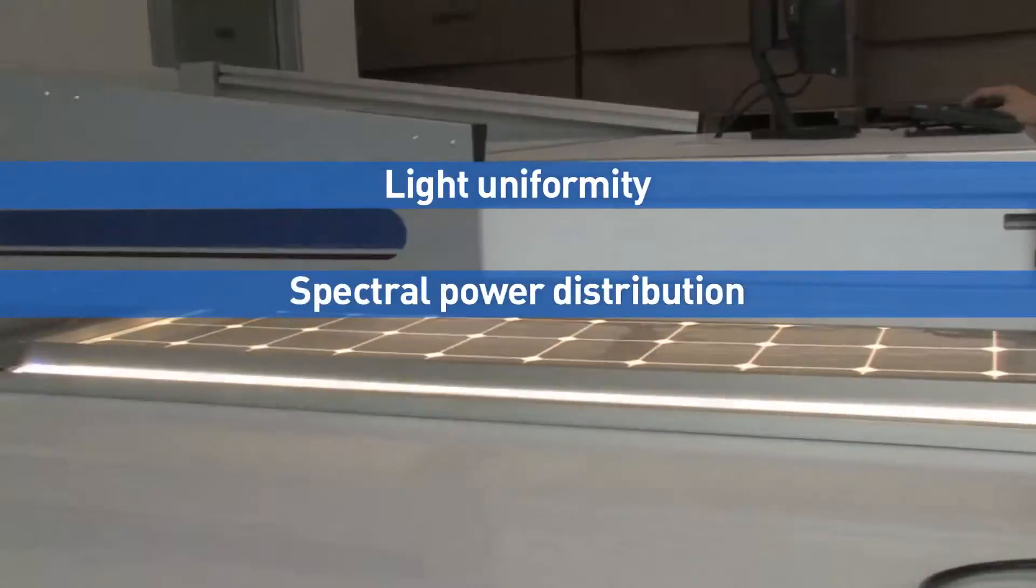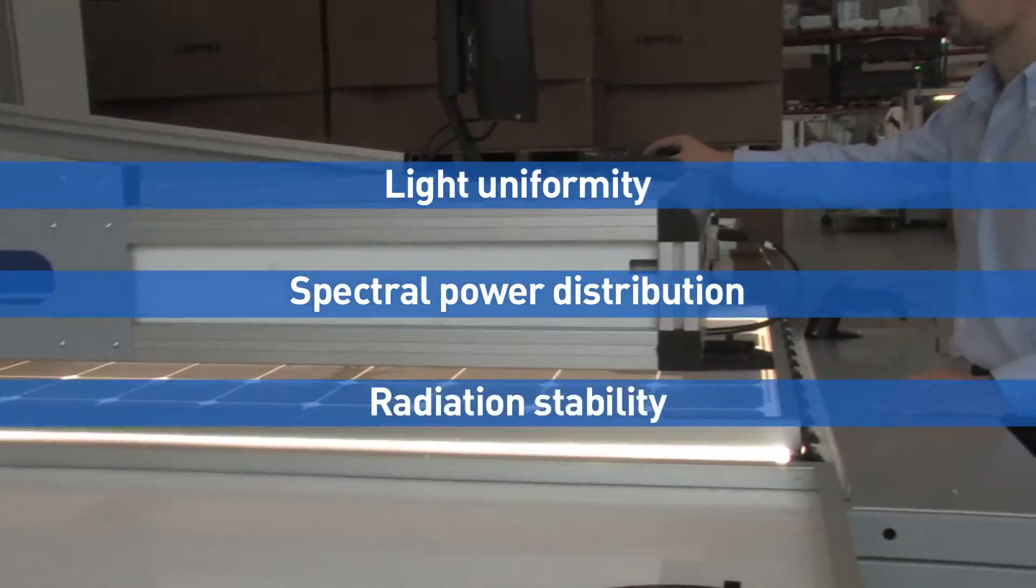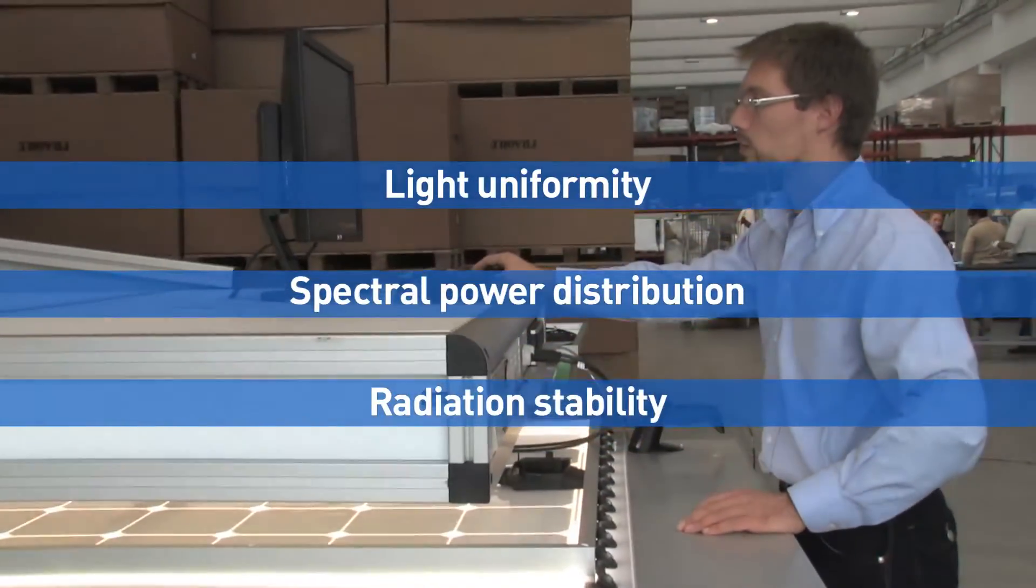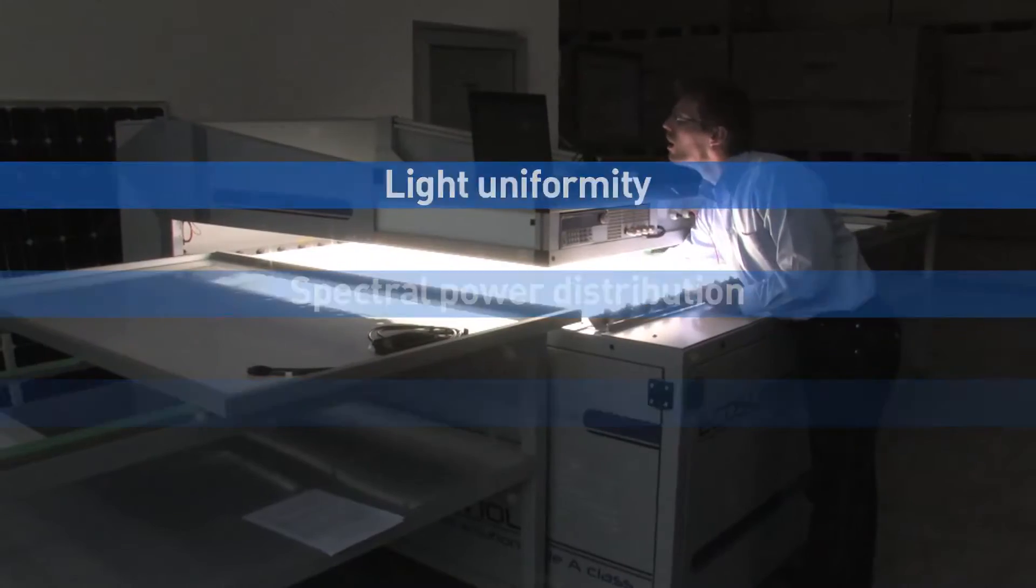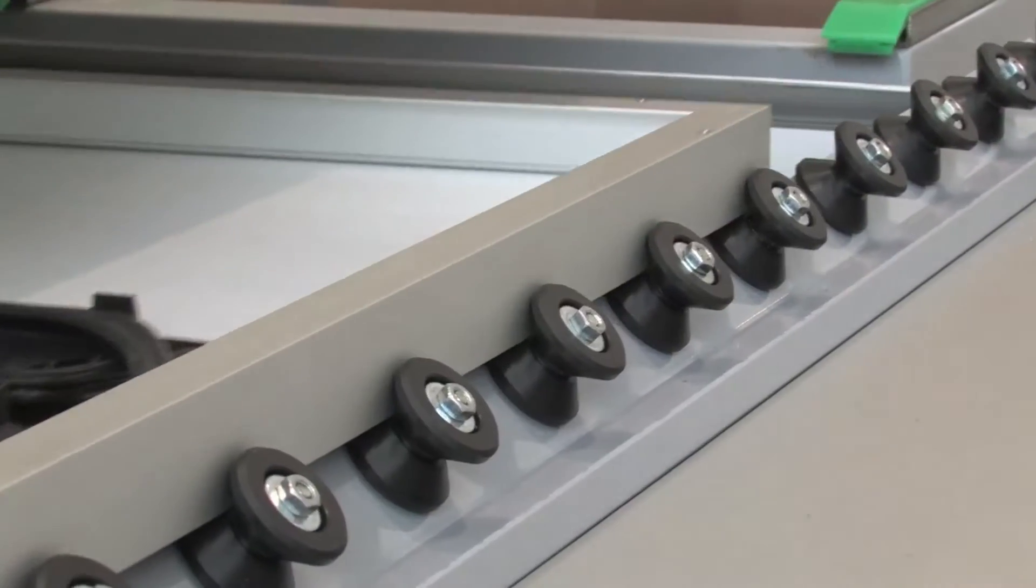One, light uniformity. Two, spectral power distribution. Three, radiation stability. Let us now see in detail these specific characteristics.